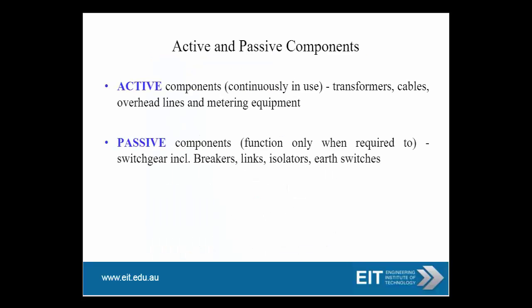In terms of active and passive components, every circuit and every system has two types of components. Active components are components that are continuously in use — they are on all the time. Once energized, they are carrying current all the time. Examples include transformers, cables, overhead lines, and metering equipment.